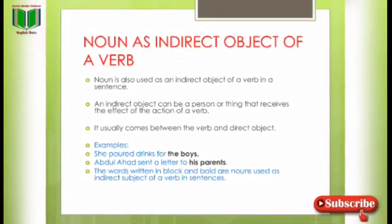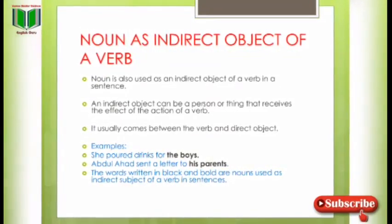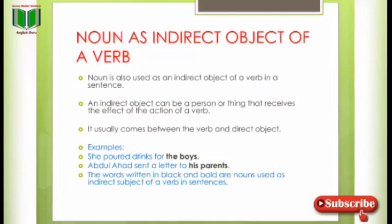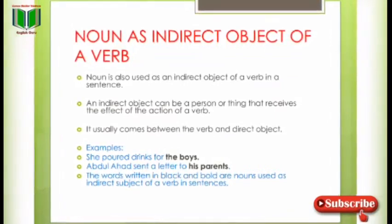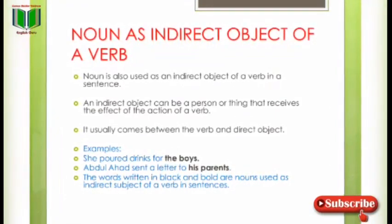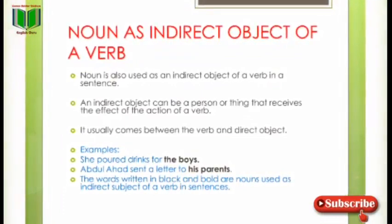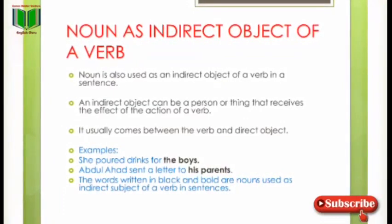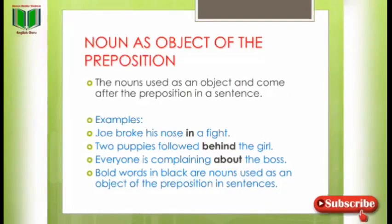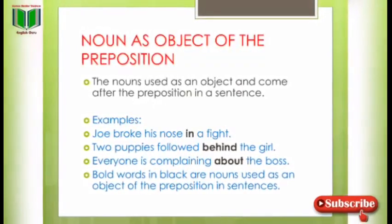Noun as indirect object of a verb — noun is also used as an indirect object of a verb in a sentence. An indirect object can be a person or thing that receives the effect of the action of a verb; it usually comes between the verb and direct object. Examples: 'She poured drinks for the boys.' 'Abdullah had sent a letter to his parents.' Subject کا action جو indirectly object پر transfer ہوتا ہے اسے indirect object کہتے ہیں۔